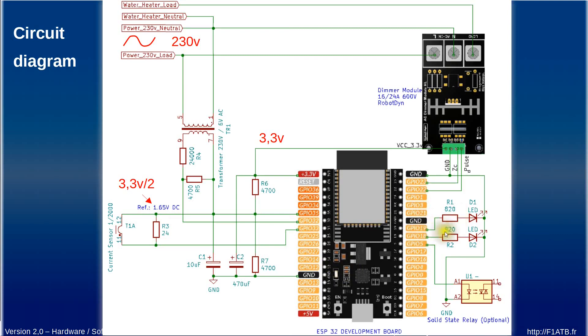then here on the right we have two outputs just to drive two LEDs in order to have a quick information on the situation and here we have the main dimmer the dimmer which will produce the energy to the water heater